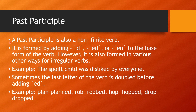Past participle is also a non-finite verb. It is formed by adding d, ed, or en to the base form of the verb. However, it is also formed in various other ways for irregular verbs. Example: 'The spoiled child was disliked by everyone' — spoiled is a past participle. Sometimes the last letter of the verb is doubled before adding ed: planned, robbed, hopped, dropped are all past participles.